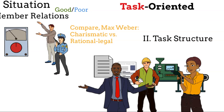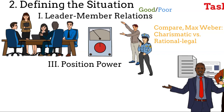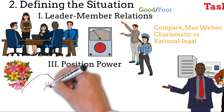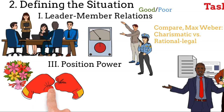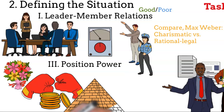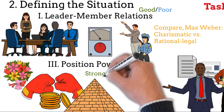Position power is the third and last dimension. This concept refers to the leader's possibilities to reward and punish employees, combined with other aspects of the leader's authority. If your manager has the right to change your salary or even fire you, but your supervisor doesn't, you're more likely to listen to the former — it's as simple as that. Generally, the higher the position in the hierarchy, the higher the authority and the stronger position power the leader has. Position power is designated as either strong or weak.